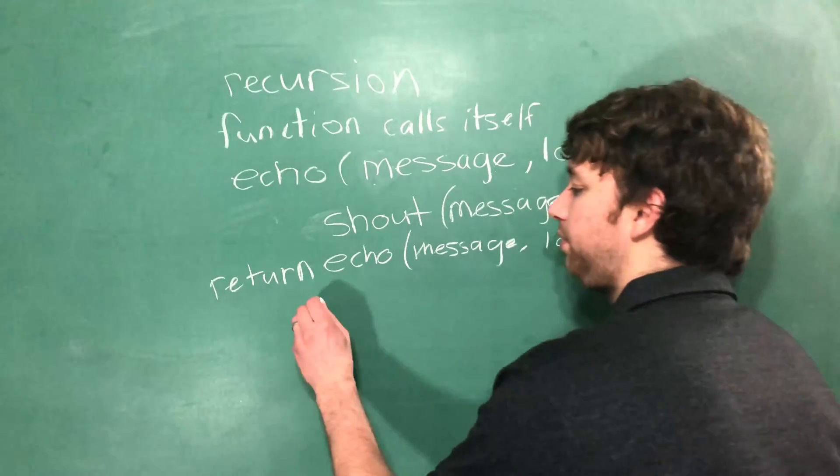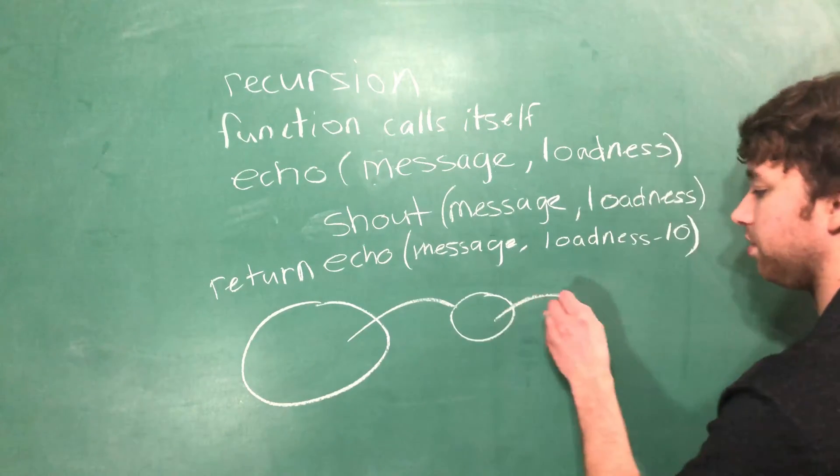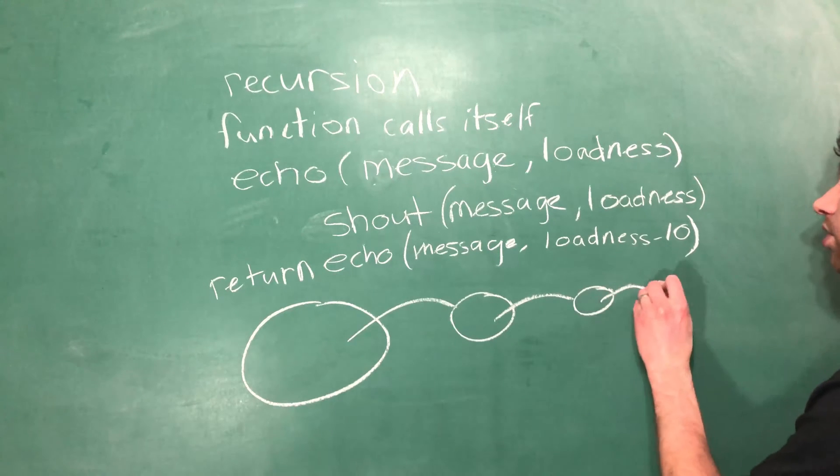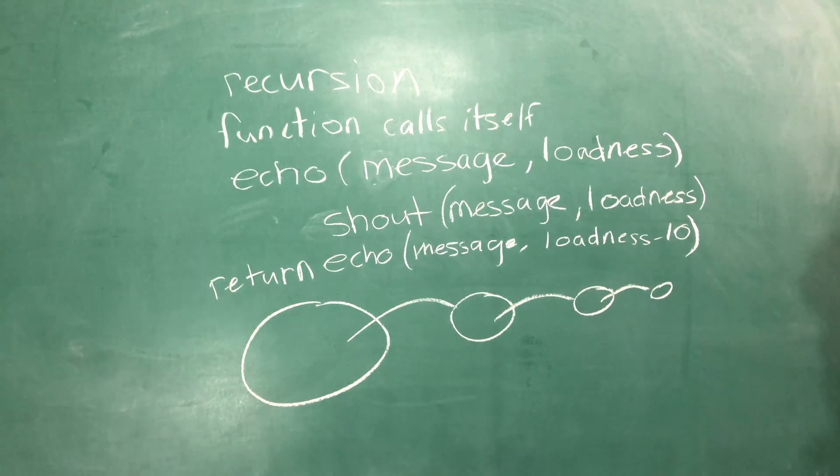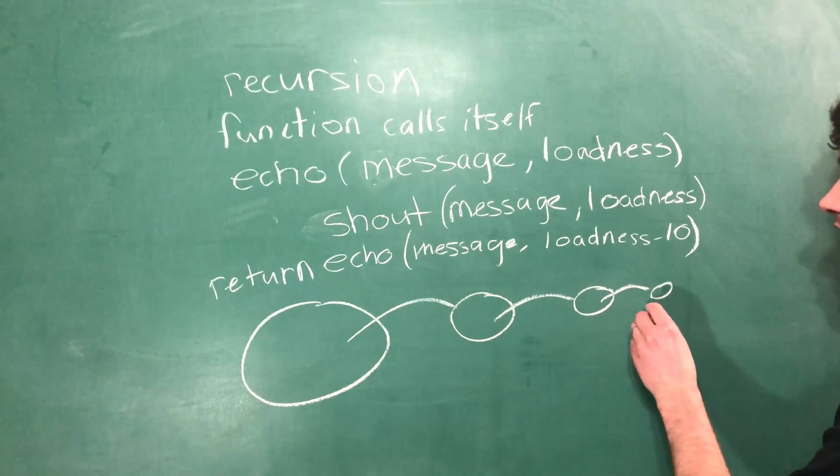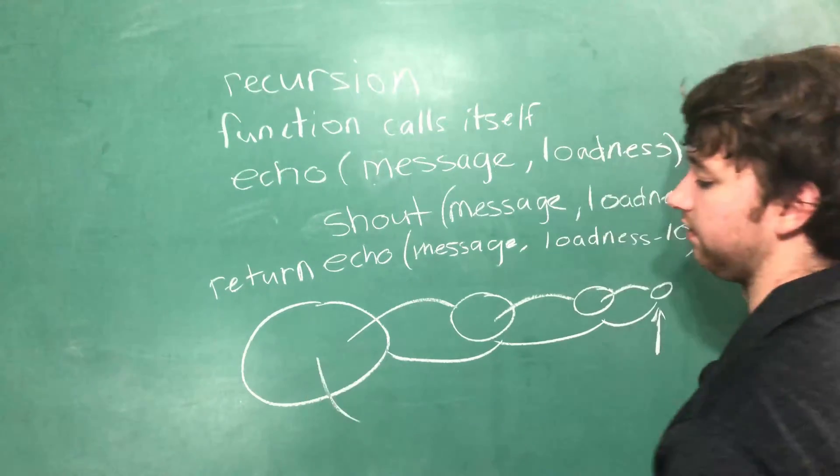We start with the big call to the function, which calls a smaller call, which calls the smallest one possible. This one needs to then finish and go back up the call stack and then finally go out of the function.